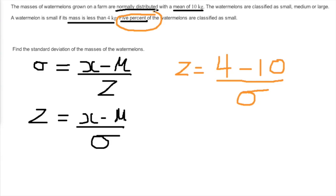And still, there are two unknowns. But we know that 5% of the watermelons are classified as small, so we can input this into the calculator to find a z-score.